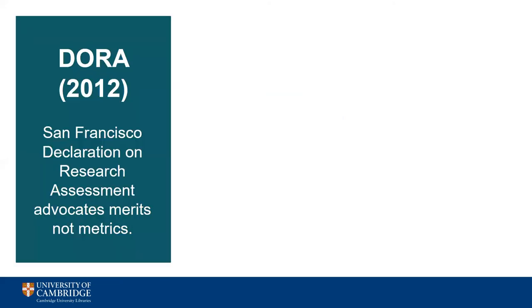There are three key documents which have contributed to the responsible metrics movement over the years. They all cover broadly the same areas, albeit with a slightly different emphasis. DORA — the San Francisco Declaration on Research Assessment — was developed in 2012 after a growing acknowledgement that the current system of metrics needed to be improved. DORA calls for each piece of research to be judged on its own merits rather than just on the strength of where it was published. The University of Cambridge signed DORA in 2019 to demonstrate an institution-wide commitment to the responsible use of metrics, but individuals and groups are also free to sign the pledge on their own.